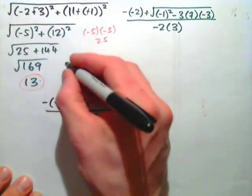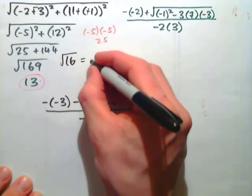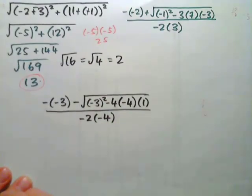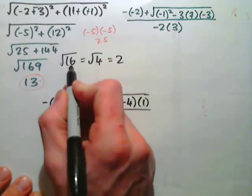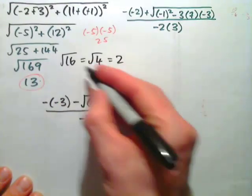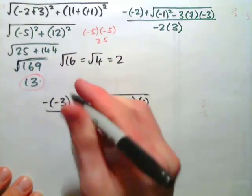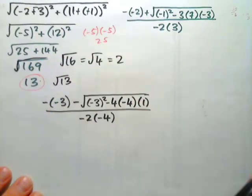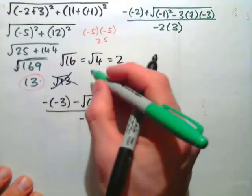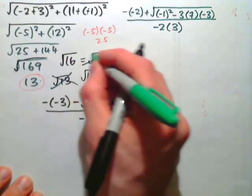Another common error: people do things like root 16 equals root 4, which equals 2. What's wrong with that? They took the square root of 16 to get 4, then took the square root of the answer again. You only take the square root once and then it goes away. Root 169 is 13 and that's it — it's not root 13. Root 16 is just 4, not root 4. You take the square root one time and you're done.